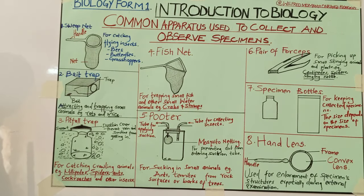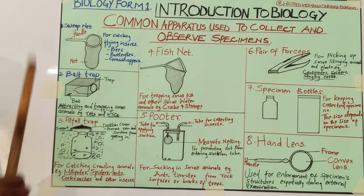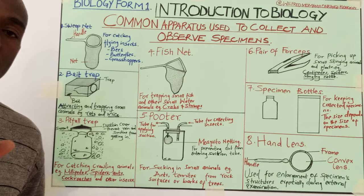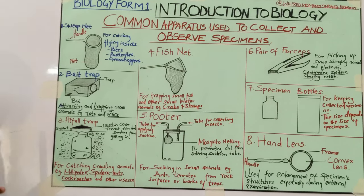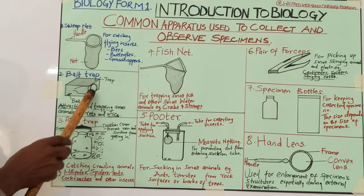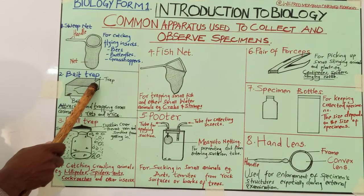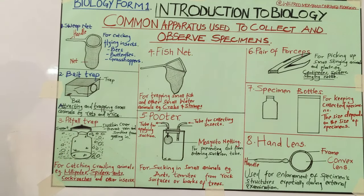The bait trap — you can see it in the diagram. There is a bait at one corner. A bait is something like a food substance that is going to attract the specimen that you want to trap. Then there is a hole through which the specimen will enter, and when the specimen enters, it will be unable to get out, and so you will have collected it.